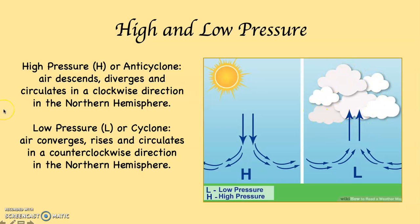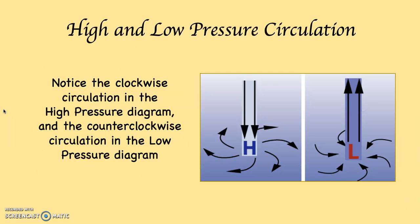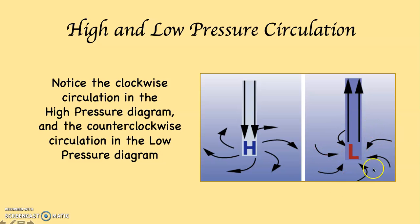Low pressure systems are associated with clouds, and clouds are associated with precipitation. Now take a look at these two diagrams: on the left-hand side we have a high pressure system where the air is descending and circulating clockwise in the Northern Hemisphere. Over here we can see a counterclockwise circulation going around the low pressure system, and the air is rising.